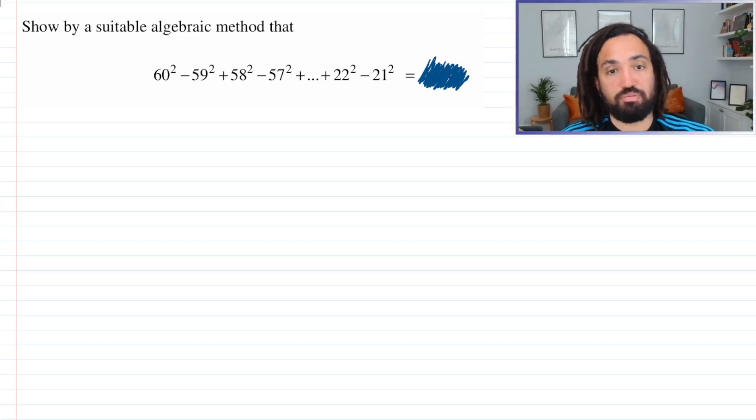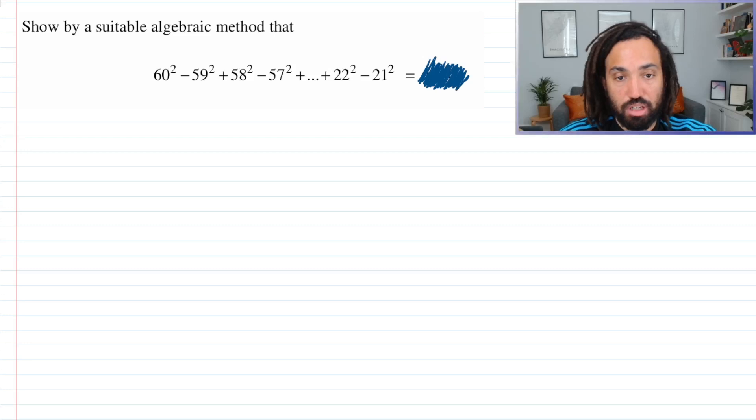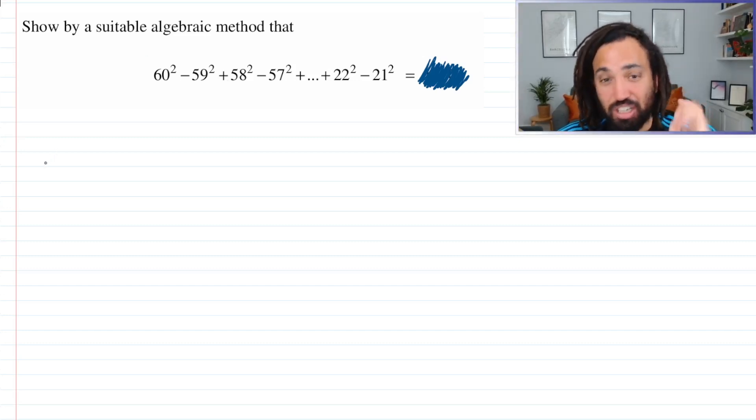It says show by suitable algebraic method that this series here has a value. I've hidden the value to create some sort of suspense. So what we're going to use is the algebraic method, the fundamental factorizing algebraic identity